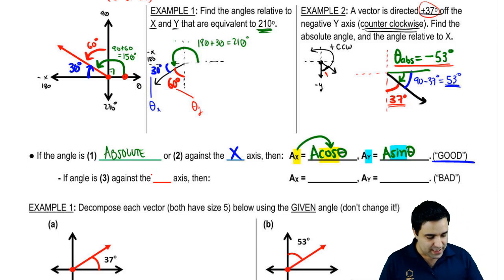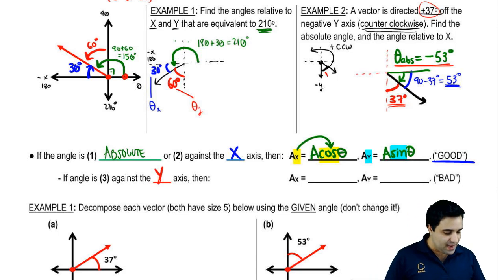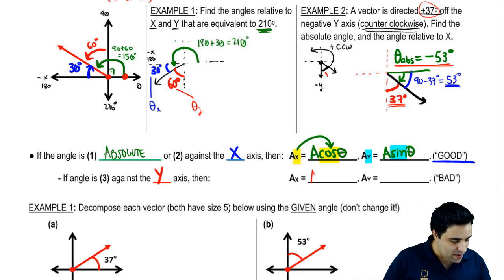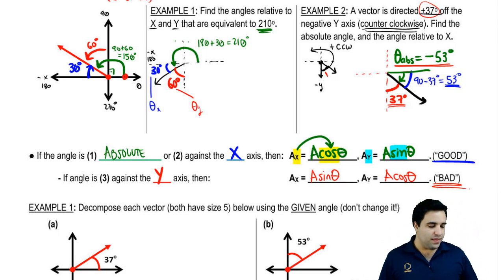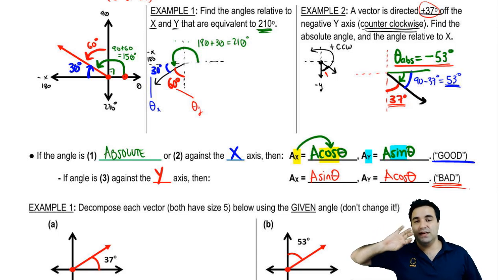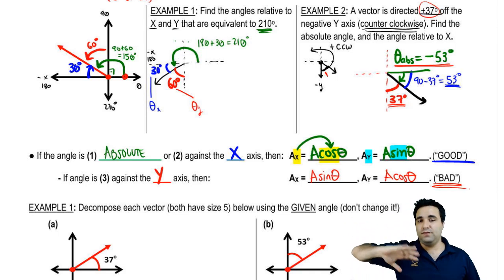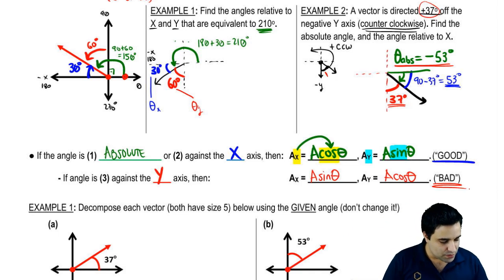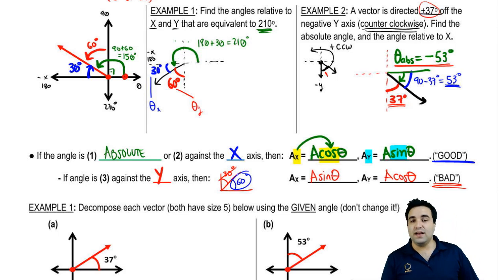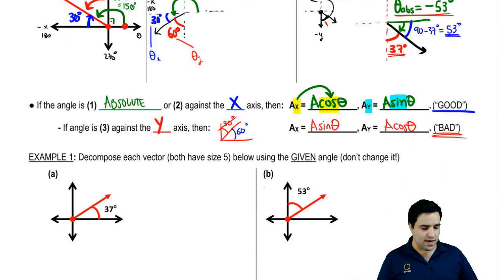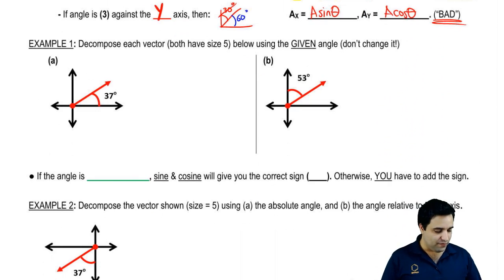If your angle happens to be against the y-axis and you can't change it, then it's basically the opposite: Ax goes with sine and Ay goes with cosine. If you have the bad angle, you have to flip the trig functions. My recommendation is to stick with the good angle. If you're given an angle on the y-axis, just replace it — for example, if this is 30, replace it with 60. Your professor will generally be fine with that.